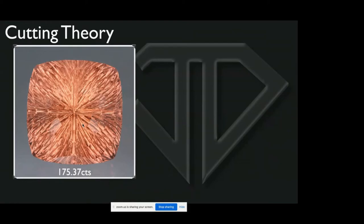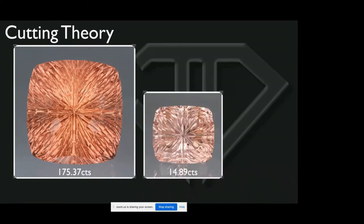On the same subject, light path also comes into play based on the size of the gemstone. This is a morganite that I cut, 175.37 carats, and this is another morganite I cut, 14.89 carats. These are both cut from the exact same piece of rough and the rough did not have color zoning. So the difference between this stone and this stone is entirely due to the size, because the bigger stone, the light is traveling further in and that means it picks up more color.